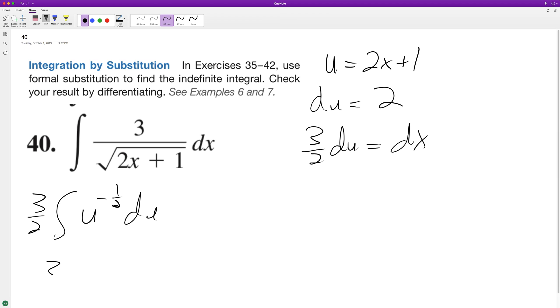So when we integrate this, we get 3 halves times u raised to the negative 1 half plus 1 half over, this ends up being negative 1 half plus 1 half, which is just 1 half. This should be 1, sorry. This ends up being 1 half, which becomes 2 over 1. So these cancel off and we're left with 3u raised to the 1 half plus c.